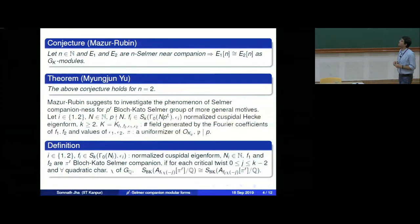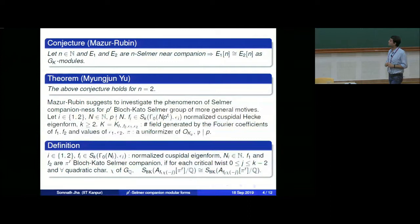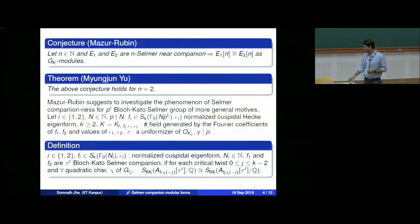Now I will state the main theorem, and then give another motivation coming from the analytic side. The proof is actually very different from the elliptic curve case to the modular form case: for elliptic curves, we have an abelian variety structure, the Kummer map, and FPPF cohomology on the Néron model. For modular forms, we don't have these tools, so we must take different methods.